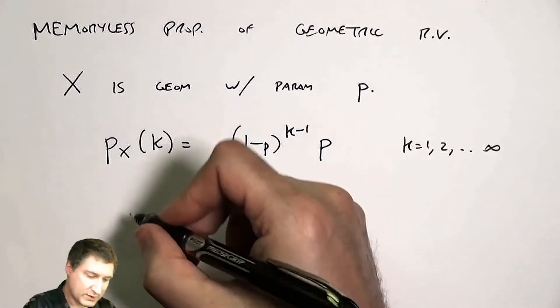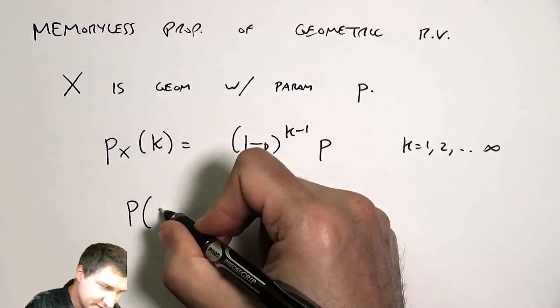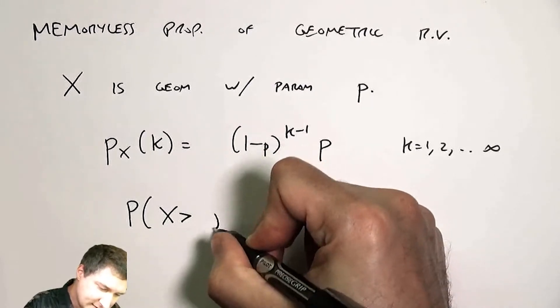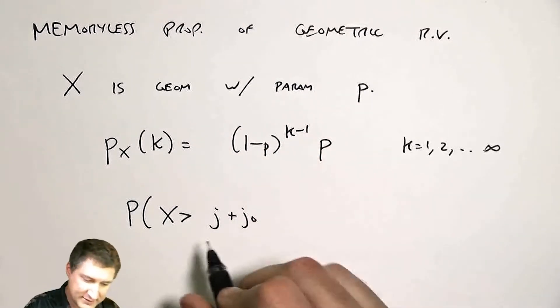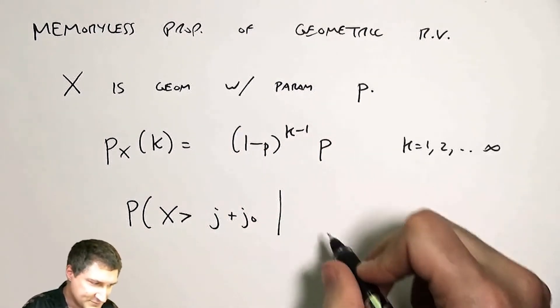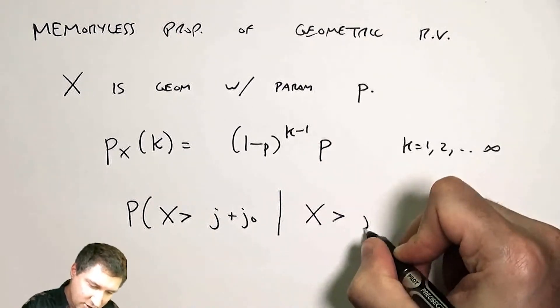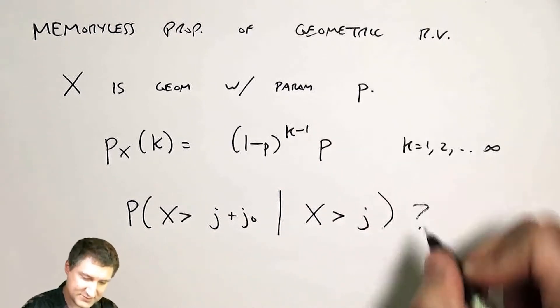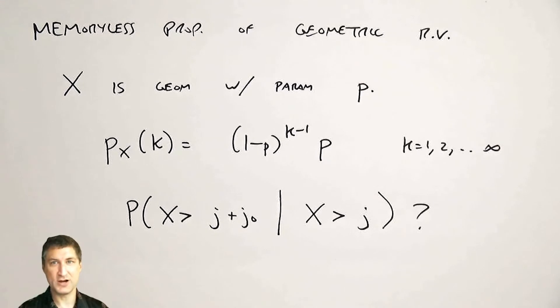So what I want to ask is, what is the probability that I need more than j plus j0 flips, given that I already needed more than j flips? So I already failed j times. What's the probability that I need to have at least j0 more flips to succeed?